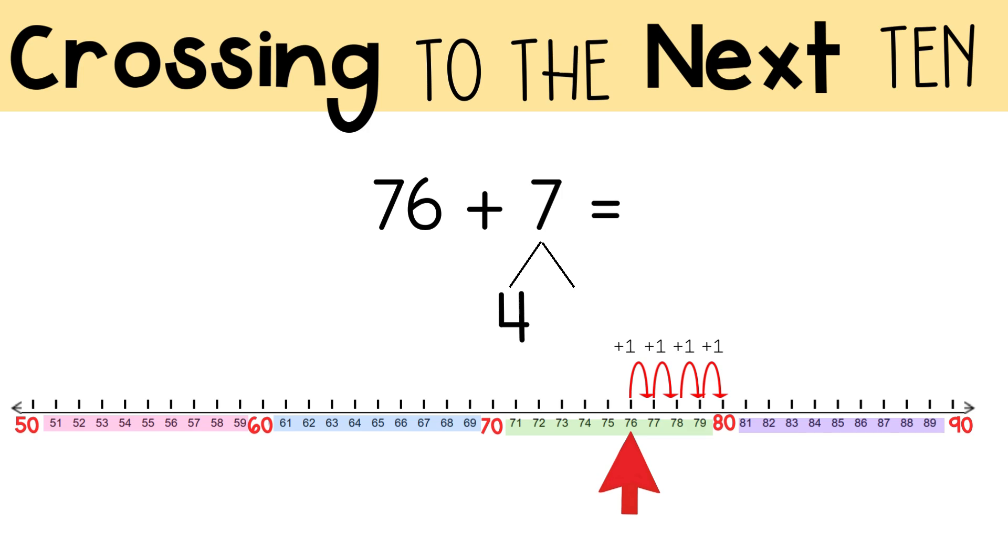You needed to add 7, but so far you've only added 4. So you had to add 3 more by making 3 more jumps. And you should have put the 3 in your number bond to show how you broke up 7 into 3 and 4. You should have landed on 83, so the sum is 83. How did you do?